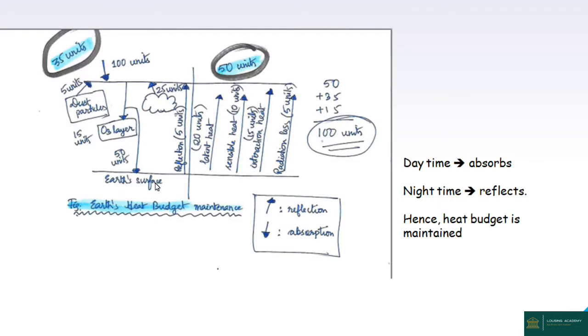The solar energy is absorbed during daytime, and during nighttime the energy system reflects back. This is the process of maintaining the heat budget.